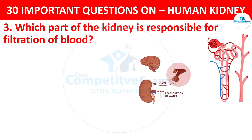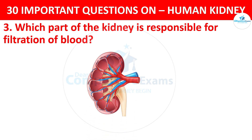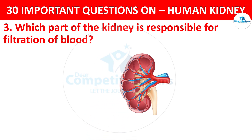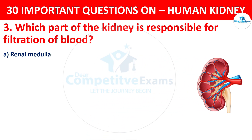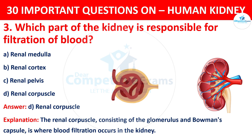Question 3. Which part of the kidney is responsible for filtration of blood? Your options are: Renal Medulla, Renal Cortex, Renal Pelvis, or Renal Corpuscle. The correct answer is D, i.e. Renal Corpuscle. The renal corpuscle, consisting of the Glomerulus and Bowman's Capsule, is where blood filtration occurs in the kidney.